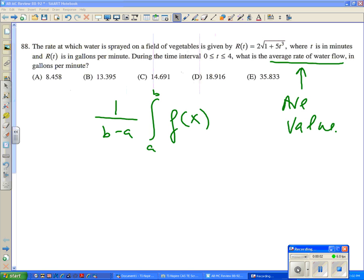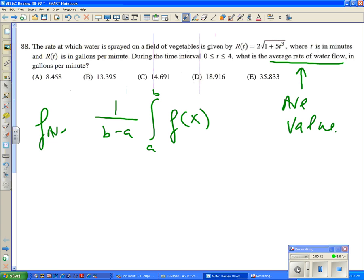Number 88. I hope you saw that term average rate. This is an average value. This is our average value function, the so-called fave function. That's the calculation. So in this case, the interval is from 0 to 4, so we'd have 1 over 4 minus 0, and then the integral from 0 to 4, and the integrand, the rate or function, is a little funky, 2 square root of 1 plus 5t cubed dt.